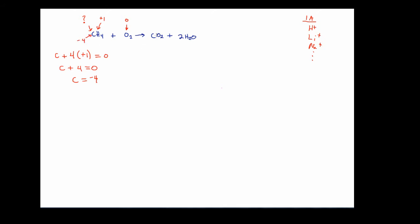Now we move to the products and do the same thing for CO2. We set up our equation, recognizing that oxygen found in a compound is almost always minus two, and carbon is again our unknown. So it's going to be C plus two times minus two equals zero, which gives us C minus four equals zero. Therefore, the carbon in CO2 is plus four.